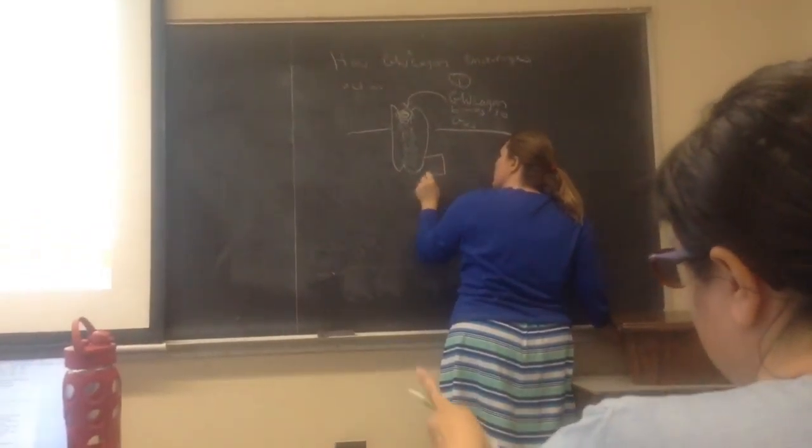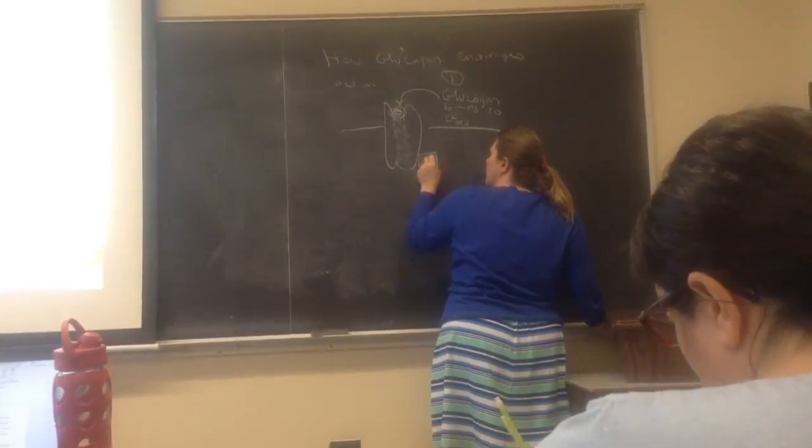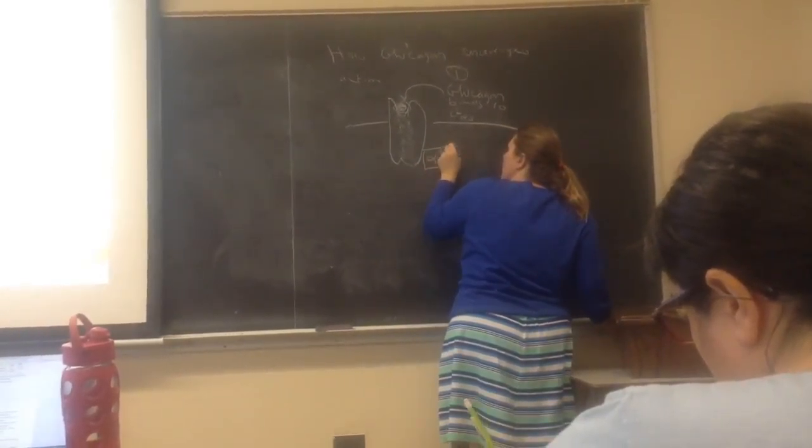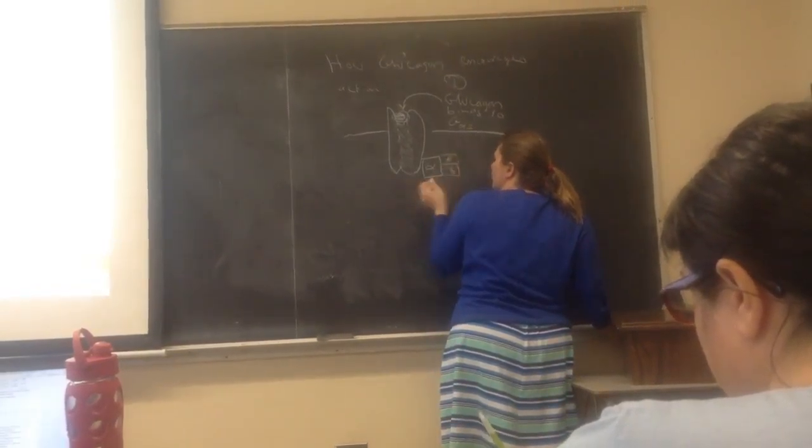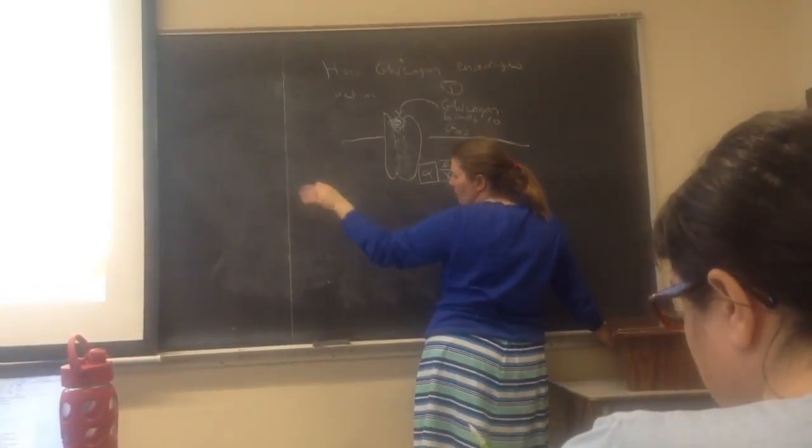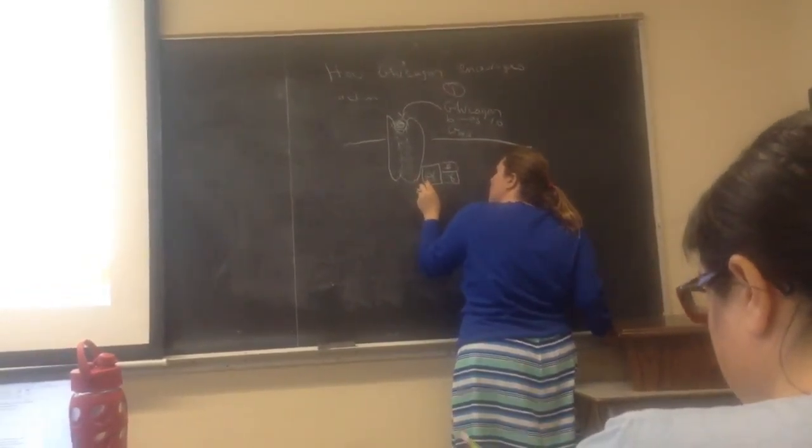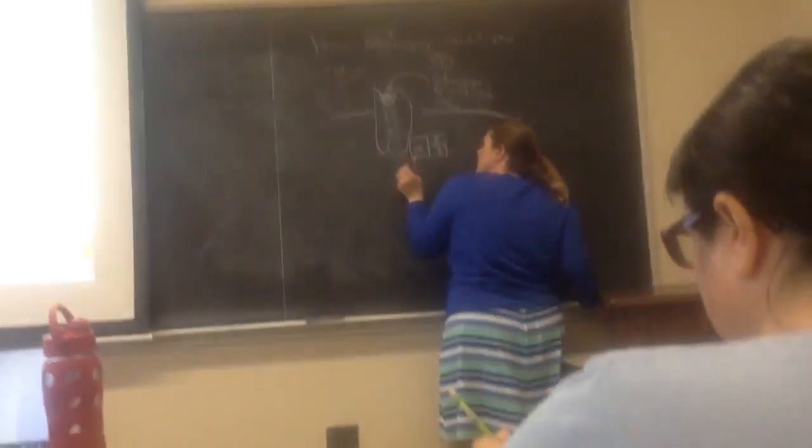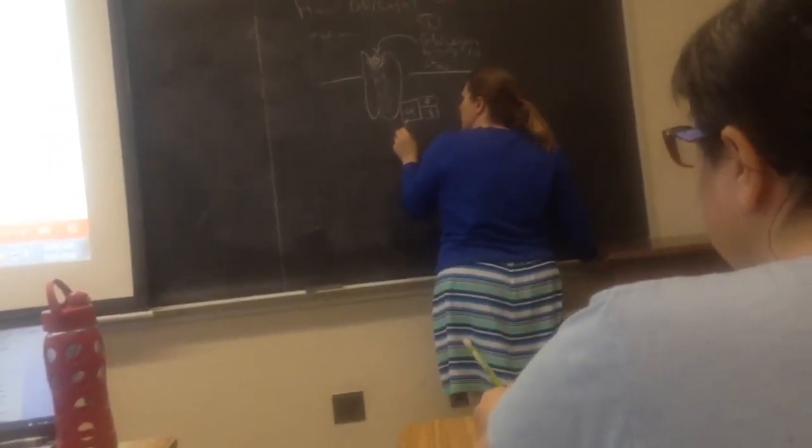So here are our three subunits. We've got our alpha, we've got our beta, and we've got our gamma. I'm trying to do it as much like this as theoretically possible. Here we've got a GDP.